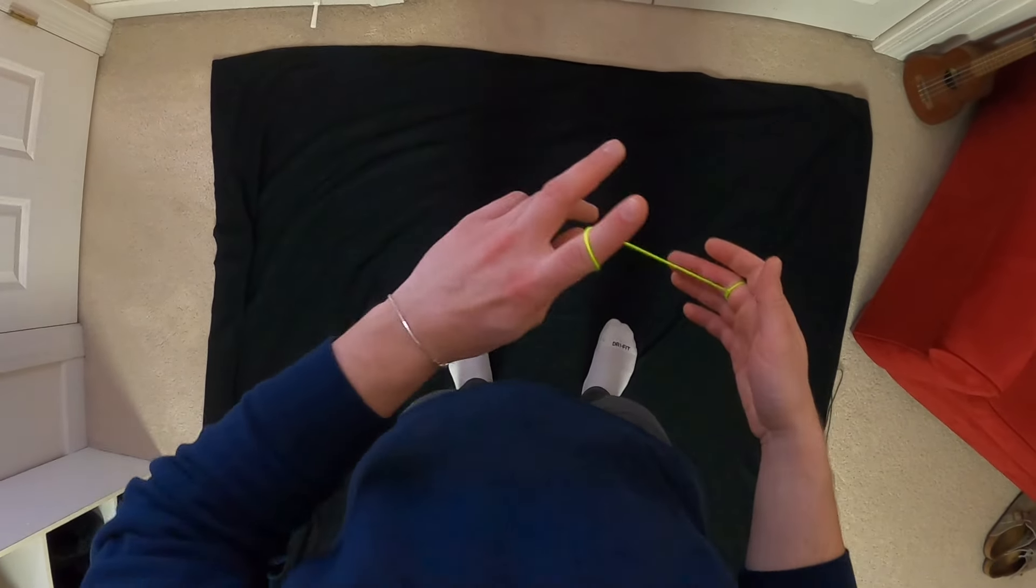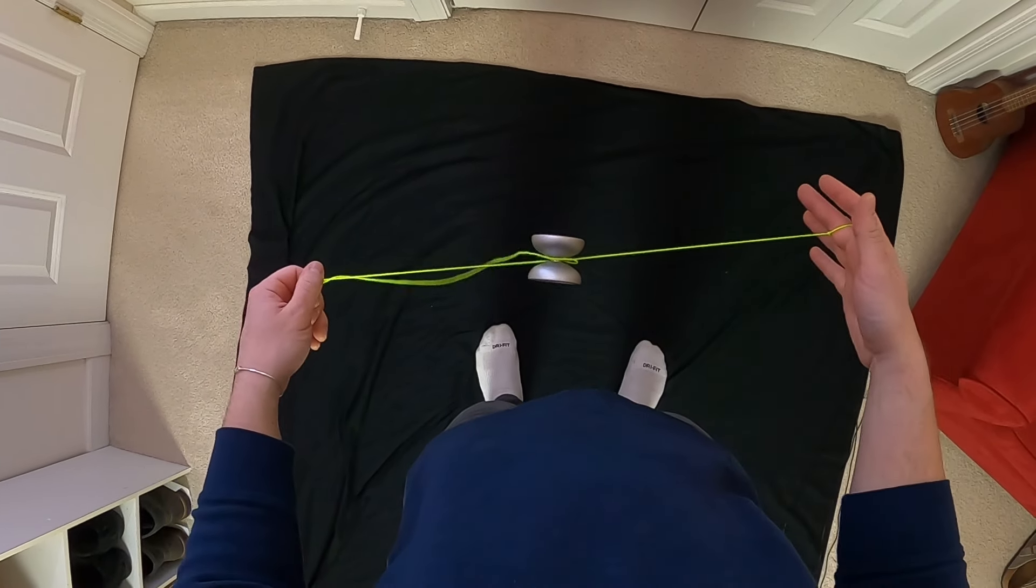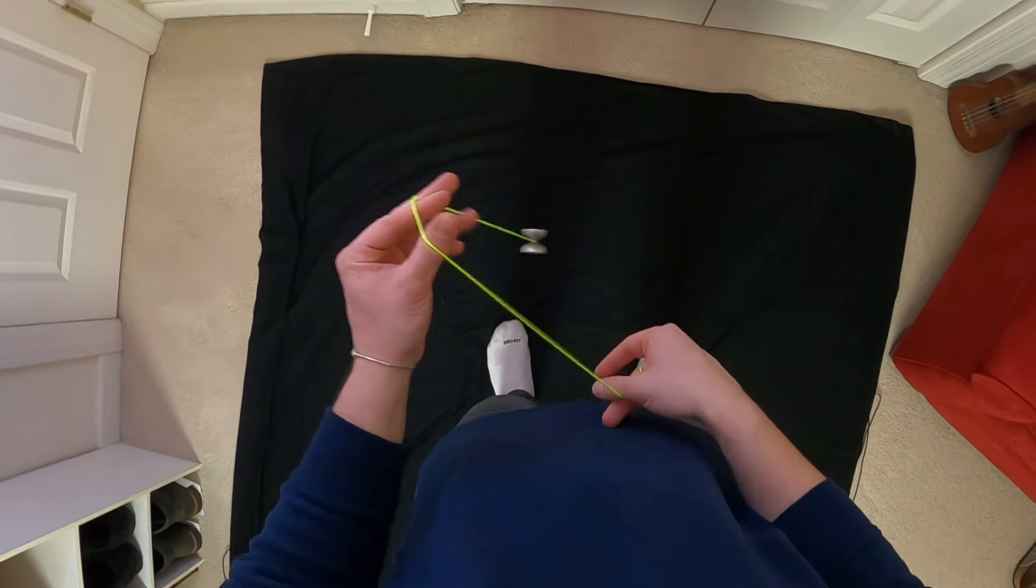And so that kind of is your last part right there. Once you whip the strings over and they're sitting like this, hop the yoyo up and out, just like an upside down green triangle.